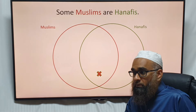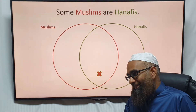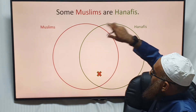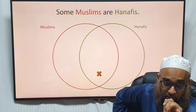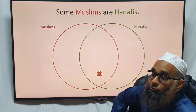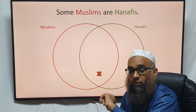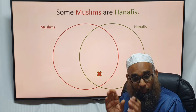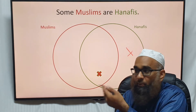Now, you might say: all Hanafis are Muslims, so can't we shade out the part of Hanafis outside Muslims? In this example it works, but you can't deduce that definitively — it doesn't work in all examples. We are looking for a general rule that applies throughout. In other I propositions, you can have people that fall outside, so shading wouldn't make sense.